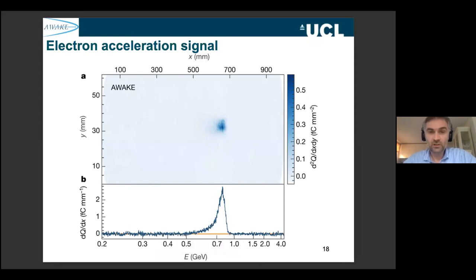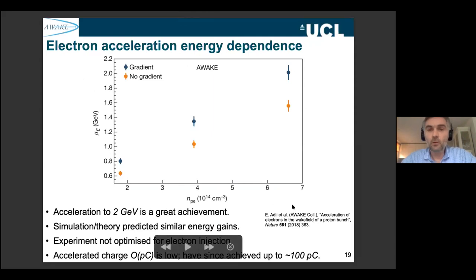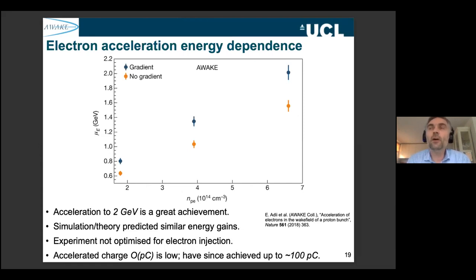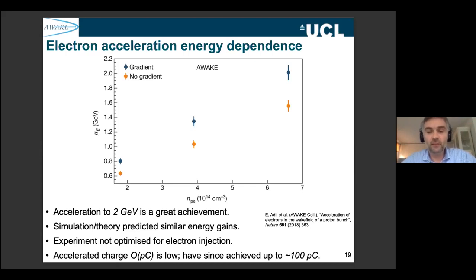We've demonstrated: we can modulate the proton bunch, inject electrons, and accelerate them to certain energies. So far we've achieved acceleration up to 2 GeV, shown in a plot of mean energy versus plasma density. 2 GeV within at most 10 metres corresponds to only 200 megavolts per metre — not much more than RF acceleration. But it is more, and it's not yet optimized. We think we should be able to stabilize and achieve gigavolt-per-metre gradients in the future. The essential method works and we're now working on improving it.